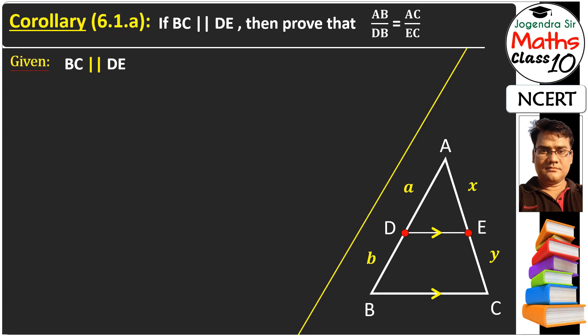We have BC parallel DE and what we have to prove? We have to prove full side of left side upon part of this side is equal to full side of right side upon a part of that line. And we can say A plus B upon B is equal to X plus Y upon Y. Let's see this proof.